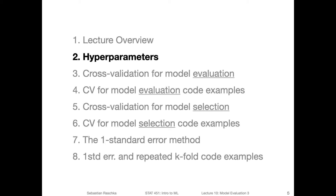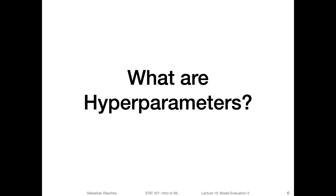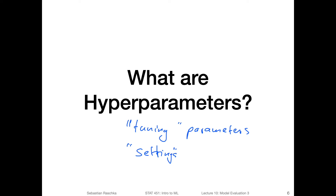Before we talk about cross validation, I want to briefly talk about hyperparameters. You probably all know what hyperparameters are, so this may be a little bit trivial, but if not, this will be a good recap. So what are hyperparameters? You can think of them as the settings or tuning parameters of your model or algorithm — something you tune manually. We can also call them options that you choose.